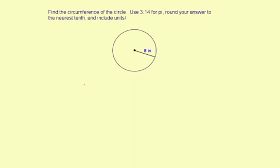Find the circumference of the circle, use 3.14 for pi, round your answer to the nearest tenth, and include units.